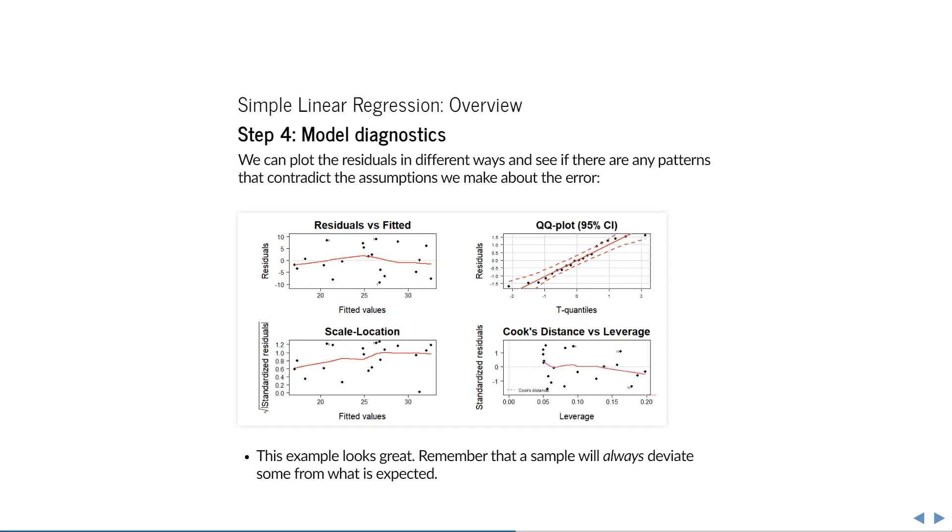In this particular example, there are no apparent issues with the assumptions made. I will quickly go over the interpretation of each plot before showing you some examples of violated assumptions. In the upper left plot is the residuals versus fitted plot. It shows the spread of the residuals along the regression line. We can use it to check for non-linearity, like a quadratic relationship, which would show up as a parabolic shape. We can also see that the variance of the residuals is more or less constant, because the distances to the gray dashed line are more or less of the same magnitude going from left to right.